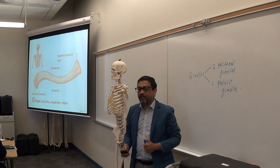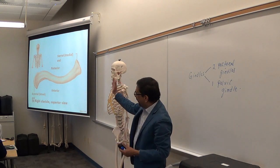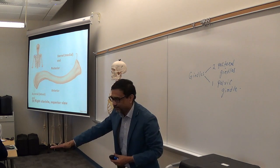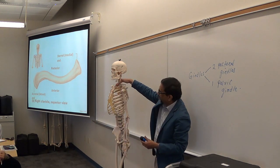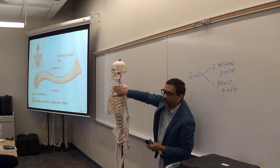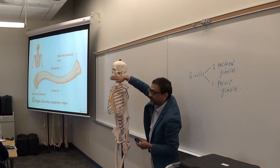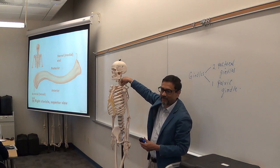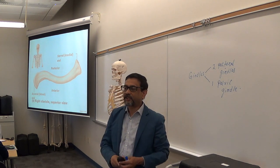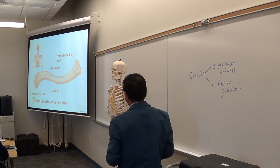Fracture of the clavicle is common. If someone falls to the ground sideways, the ribs are slightly behind the clavicle, so the impact is taken by this bone first. Therefore, fracture often occurs in the clavicle.